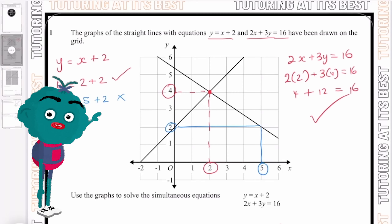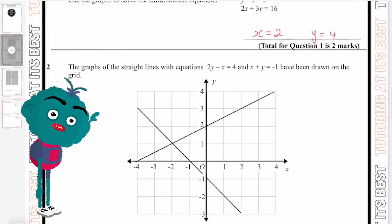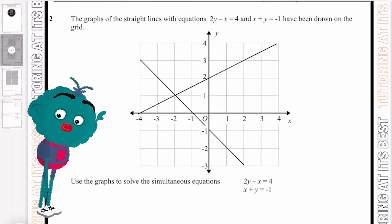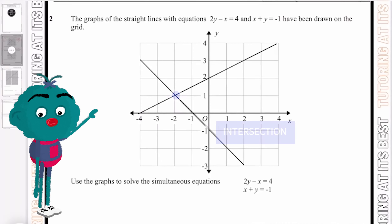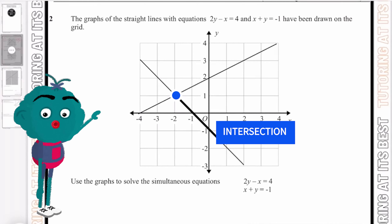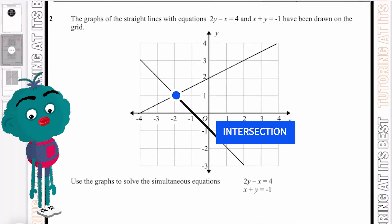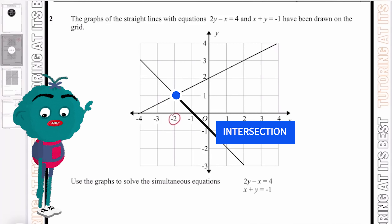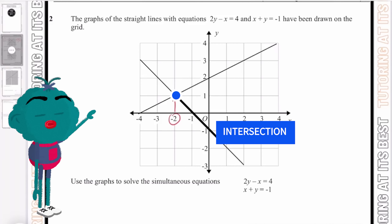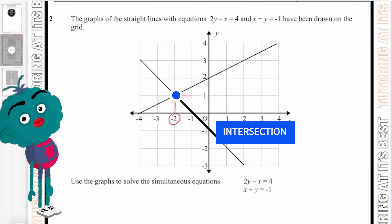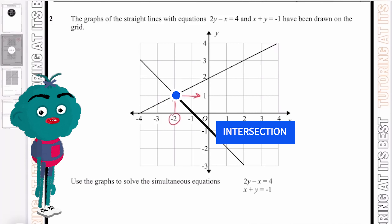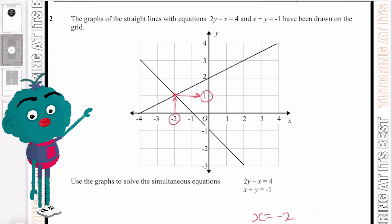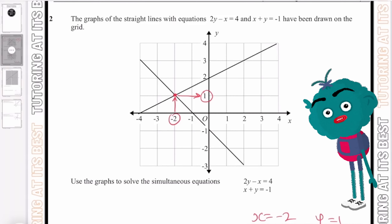With that in mind, let's go over to question 2. We need to find the intersection. The intersection falls at the point where x is minus 2 and y is 1. So x equals minus 2 and y equals 1.